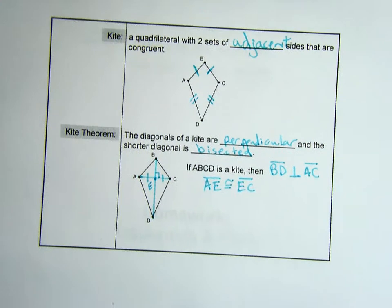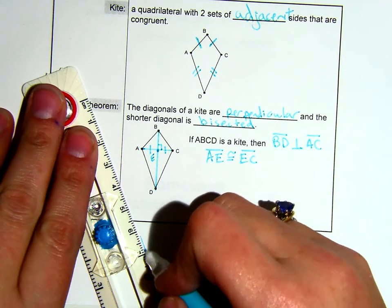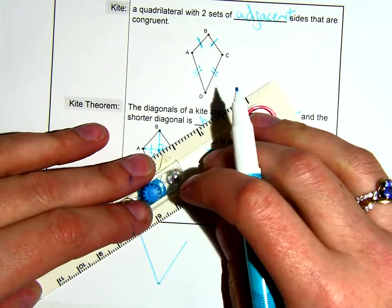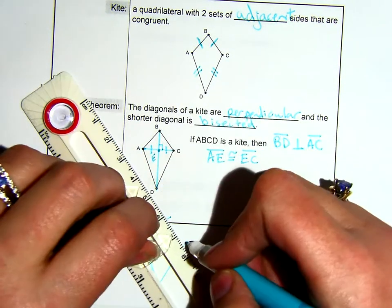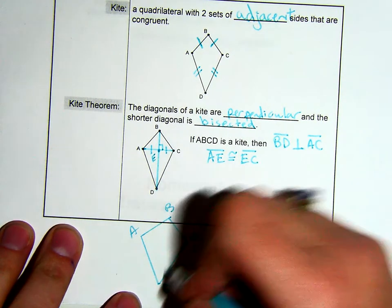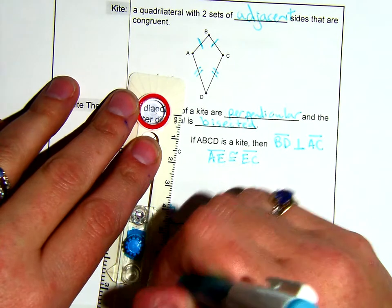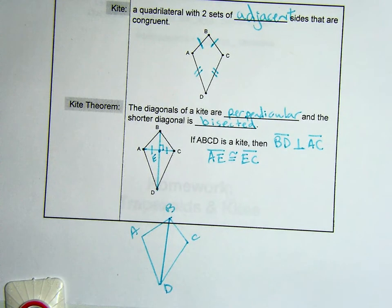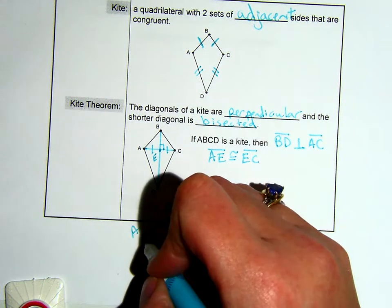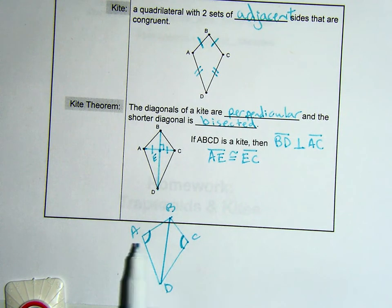There is one more useful thing about a kite. So I'm going to go ahead and draw a kite. Let's call it ABC again. If we connect it long ways, there is a set of angles that are also congruent. See how I can take this triangle and fold it on top of that triangle down that diagonal? Angle A and angle C are congruent. This does not work if I draw the short diagonal.